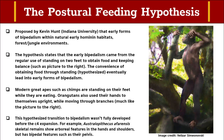For example, Australopithecus afarensis skeletal remains show arboreal features in their hands and shoulders, but also has bipedal features such as in their pelvis. This now leads us into the Provisional Hypothesis.